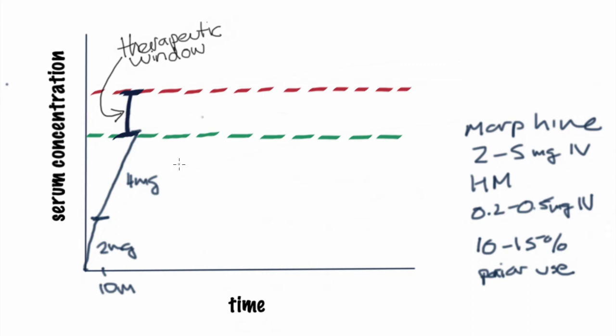After that, the patient will say, thank you so much, my pain is down to a 3 out of 10. So I've achieved rapid symptom relief. And oftentimes, you can get there after just 1 or 2 doses. But if not, I'll repeat this process until I achieve target for symptomatic relief, for pain or dyspnea.